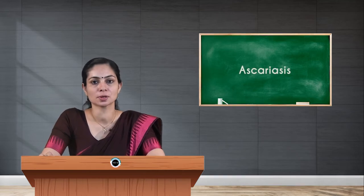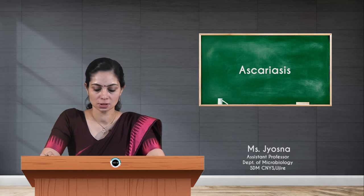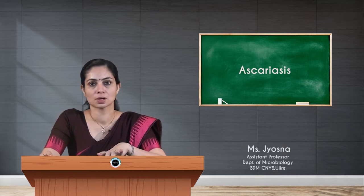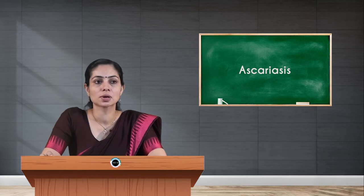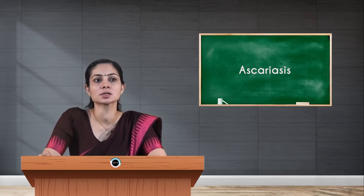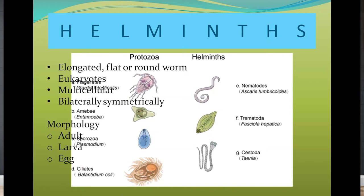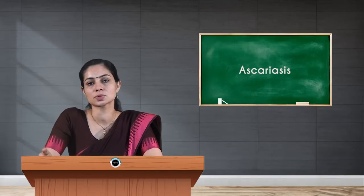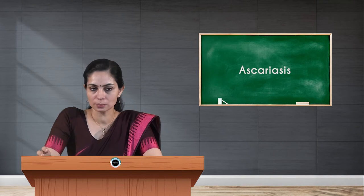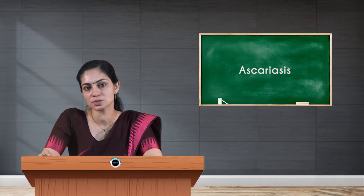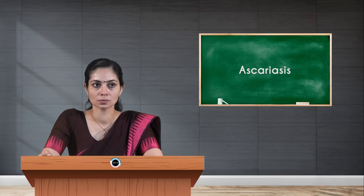Welcome to this session on protozoology and helminthology. Today we are going to discuss helminths. Helminths are parasites which are elongated — they can be flat or round worms. They are eukaryotic with a multicellular structure and are bilaterally symmetrical. They have three morphological forms: adult forms, larval stage, and egg stage. Helminths are classified into three groups: nematodes, trematodes, and cestodes. Nematodes are worm-like structures, trematodes are flukes, and cestodes are tapeworms.